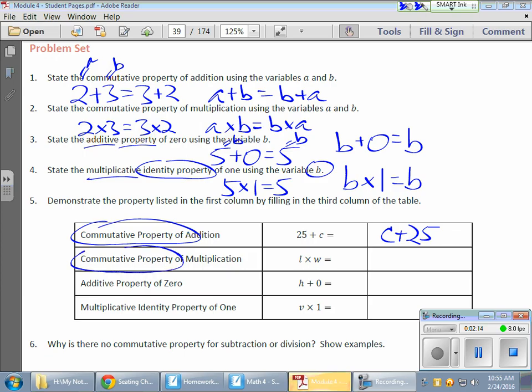The commutative property of multiplication, if I'm taking l and multiplying it by w, that's the same as taking w and multiplying it by l.